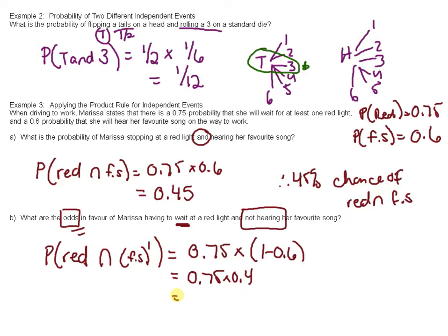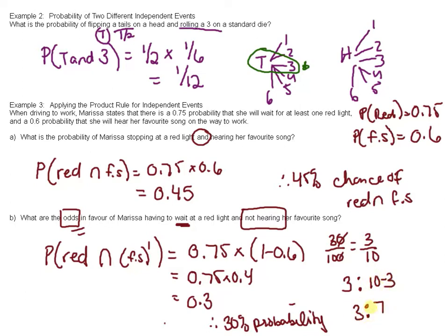I get 0.3. So there is a 30% chance, but this is probability. 30% probability. In other words, because it would be 30 over 100, or just 3 over 10, we can do 3 and then 10 minus 3. So 3 to 7. And 3 to 7 are the odds in favor of waiting at a red light but not hearing her favorite song.